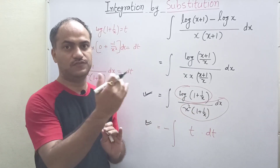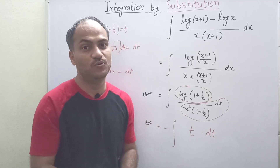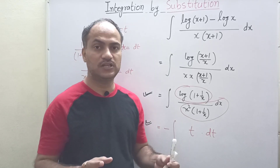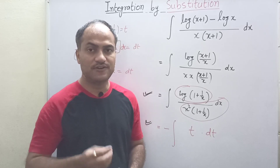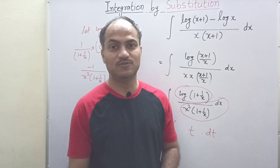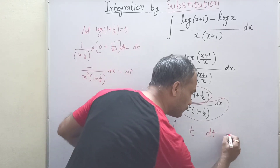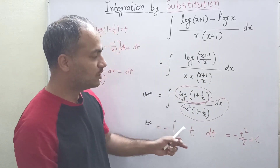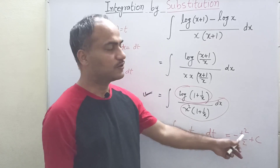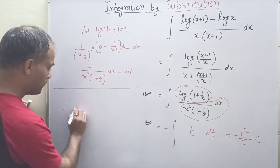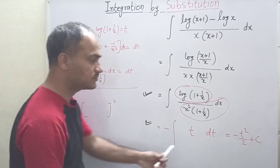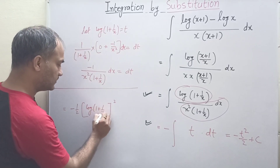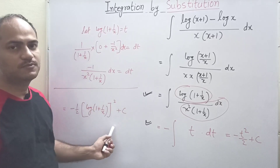The difficulty level of this integration was very high originally, but after substitution it is extremely low — this is the beauty of the method. The log term becomes simply t, so the integral is the integral of t · (−dt), which equals −t²/2 + C. Substituting back t = log(1 + 1/x), the final answer is −(1/2)[log(1 + 1/x)]² + C.